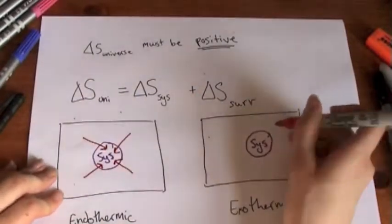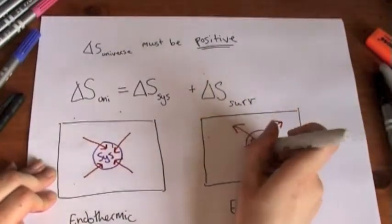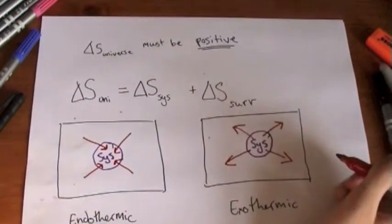In an exothermic process, the system loses heat and this goes into the surroundings. So this box is supposed to be the whole universe and this is the system and this is the surroundings.